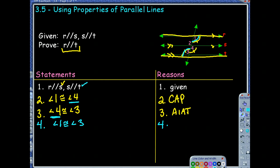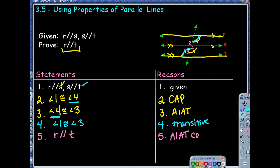We can't say alternate interior angle theorem because we don't know that these lines are parallel yet — that's what we're proving. But now that I've stated angle 1 and angle 3 are congruent, line R is parallel to line T. That is because the alternate interior angle theorem converse — I had congruent angles to prove parallel.